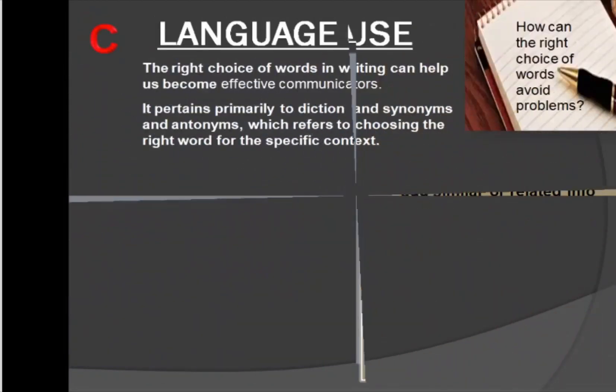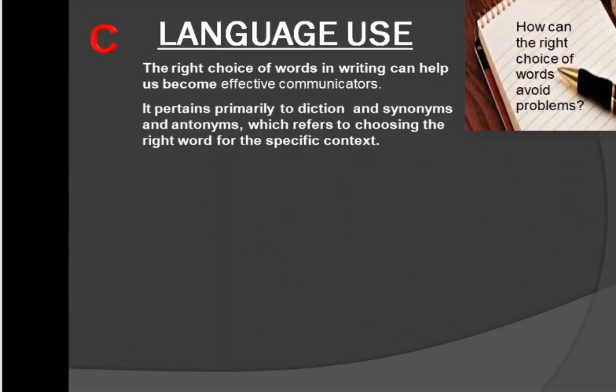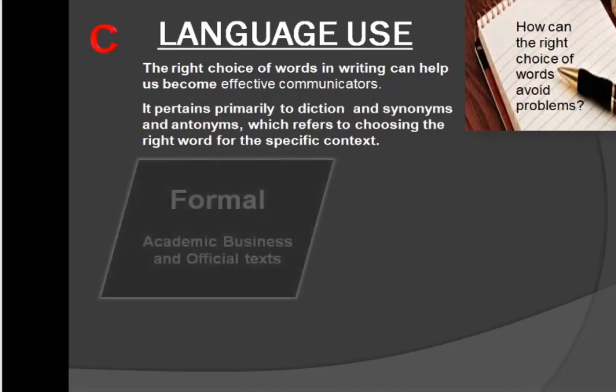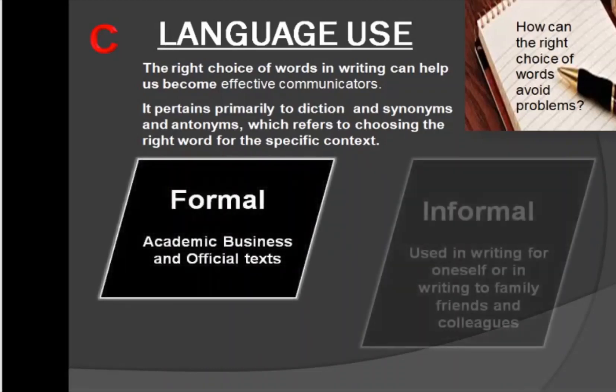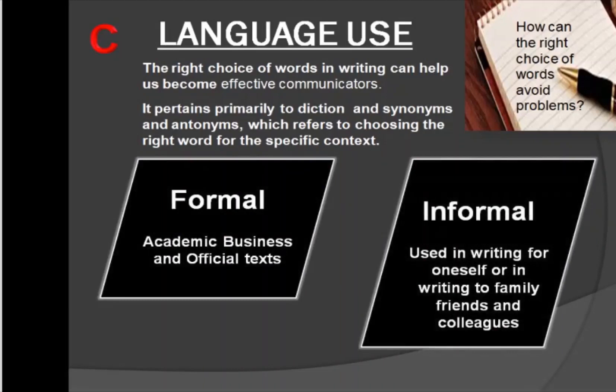Now let's go to language use. How can the right choice of words avoid problems? The right choice of words in writing can help us become effective communicators. It pertains primarily to diction and synonyms and antonyms, which refers to choosing the right word for the specific context. You must bear in mind your audience and purpose. In academic and professional writings, you might choose formal over informal words.